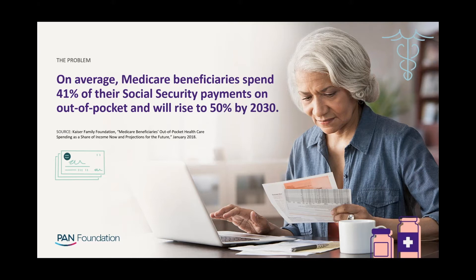A 2018 study by the Kaiser Family Foundation found that on average, Medicare beneficiaries spend 41% of their Social Security payments on out-of-pocket costs, and that number will rise to 50% by 2030. Another study by the Commonwealth Fund reported that the underinsured population in 2020 was more than 40 million and is expected to grow, creating an even bigger gap.